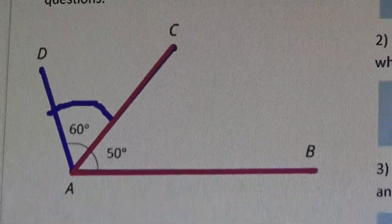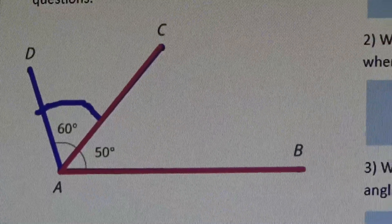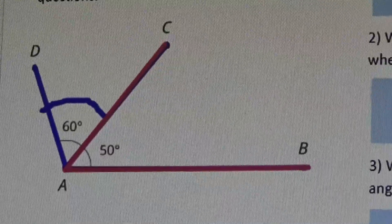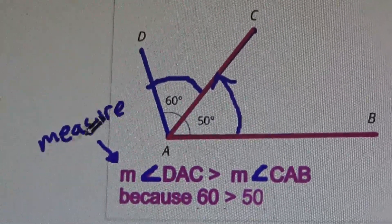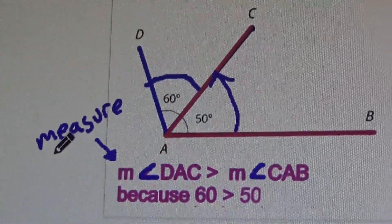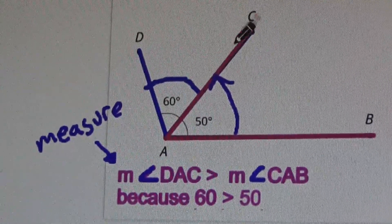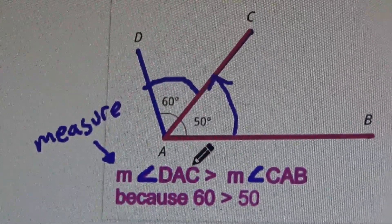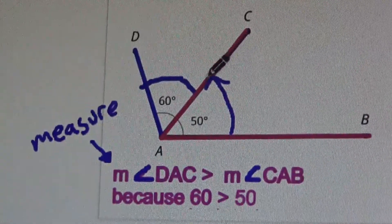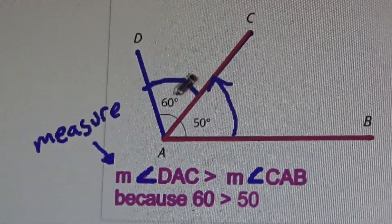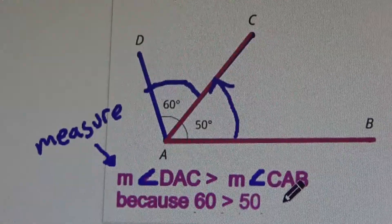Let's pause here to reflect and write your answer to the question, then press play to continue. The little m here means measure. So the measure of angle DAC is greater than the measure of angle CAB, because 60 is greater than 50.